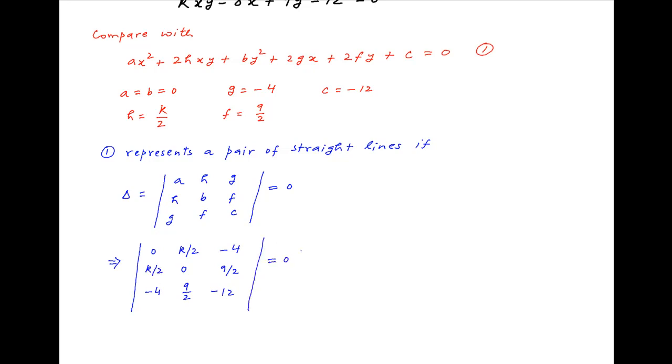Equate this to 0 and take half common from each of the 3 rows. We get 1 upon 8 times a determinant with rows 0 k minus 8, k 0 9, and minus 8, 9, minus 24 is equal to 0.